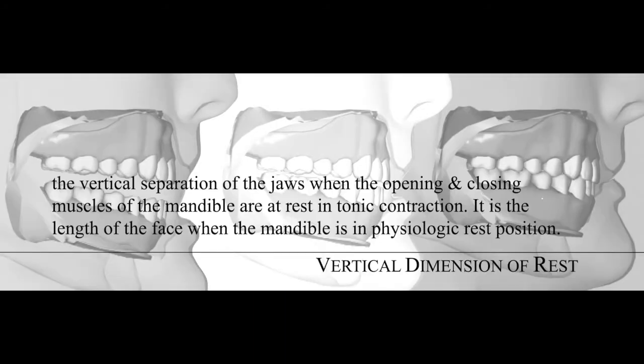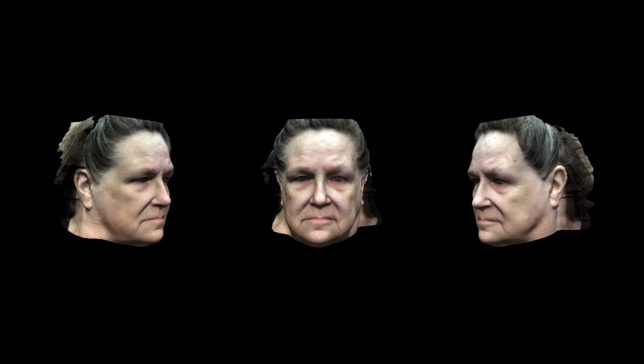The most commonly used method is using the vertical dimension of rest. The vertical dimension of rest is the vertical separation of the jaw when the opening and closing muscles of the mandible are at rest in tonic contraction — it is the length of the face when the mandible is in physiologic rest position. Basically, we ask the patient to gently relax and lightly touch the lips — this is the vertical dimension of rest, and you can ask this position for all edentulous patients.